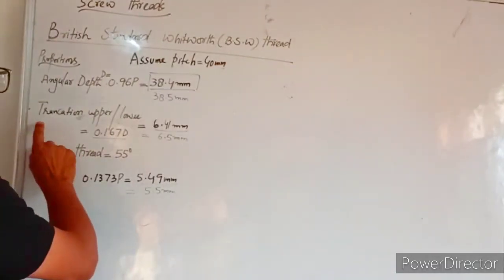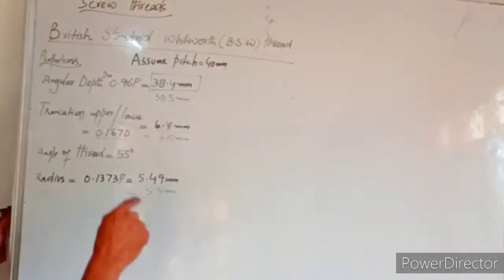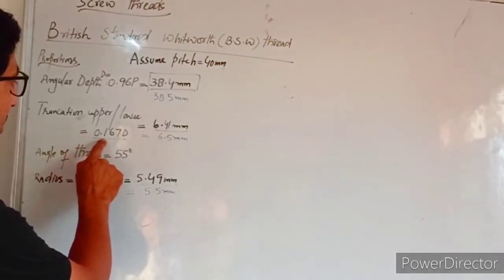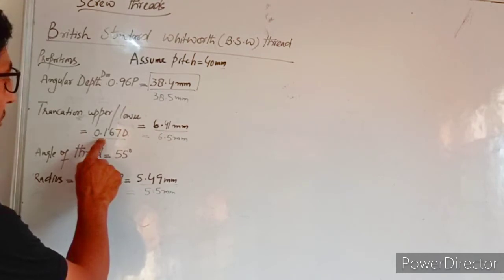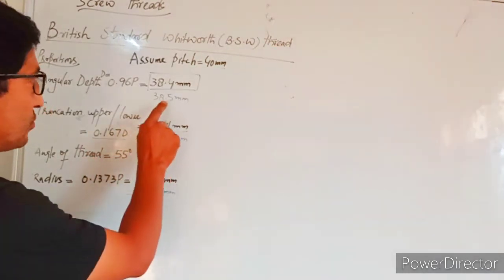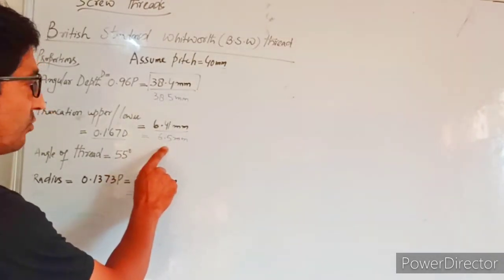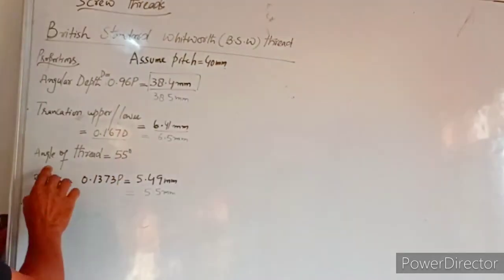Then there are the truncations, two truncations: the upper truncation and the lower truncation. The upper truncation is 0.167d, and when we substitute the value of d, that comes out to 6.41, so we round up to 6.5mm.